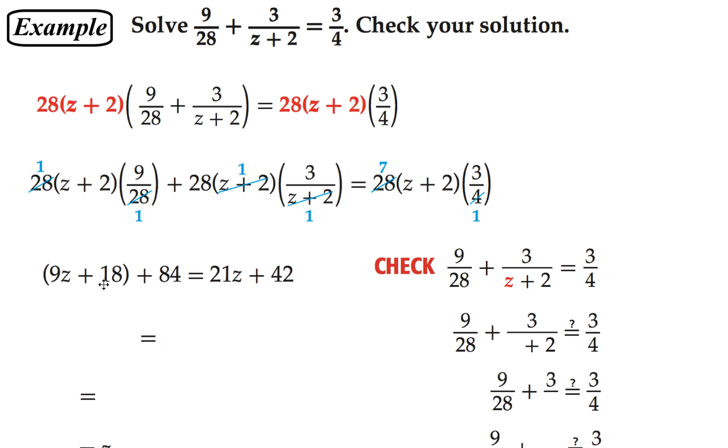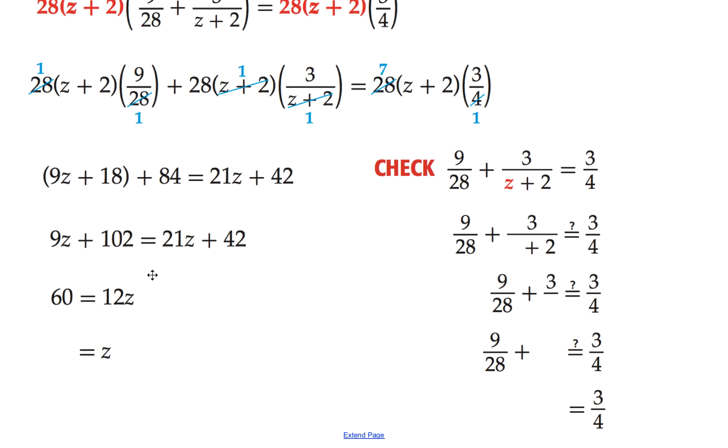Combining our like terms, we have 84 plus 18, so we get 102, and we still have 9z there, and then the right-hand side. Subtracting 9z from both sides and subtracting 42 from both sides, we end up with 60 is equal to 12z, and then dividing by 12 gives us z equal to 5.